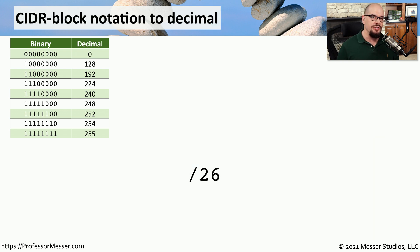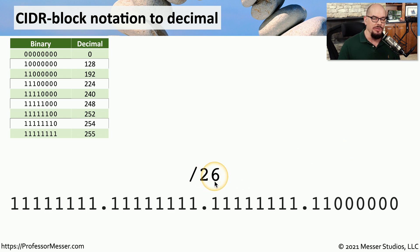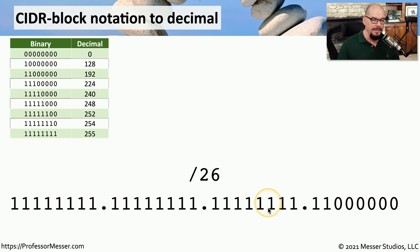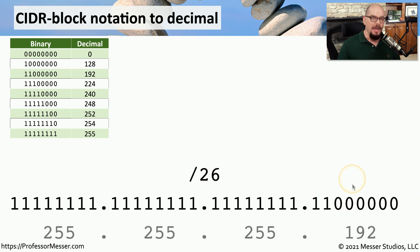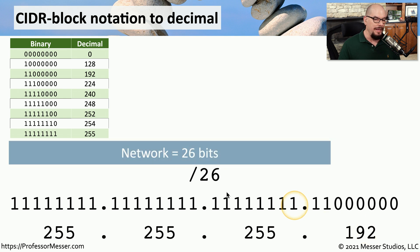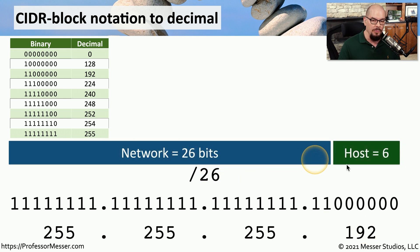Let's do the same calculation in reverse, starting with a slash 26. First, we write it out in binary — that means there will be 26 ones. Writing those out into our four octets, the first three octets are all 1s, and the last octet is 1, 1, followed by six 0s. Performing the binary-to-decimal conversion, slash 26 is also known as 255.255.255.192. That means there are 26 bits set aside for the network, and the remaining six bits are the host bits.